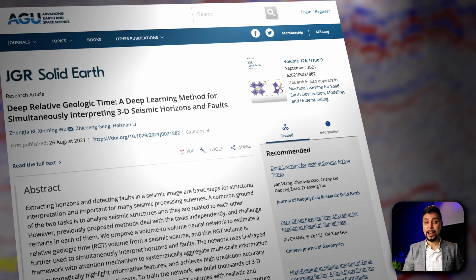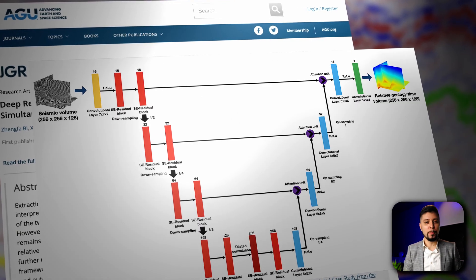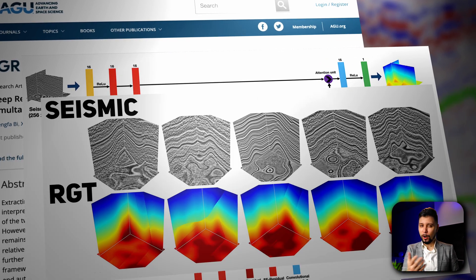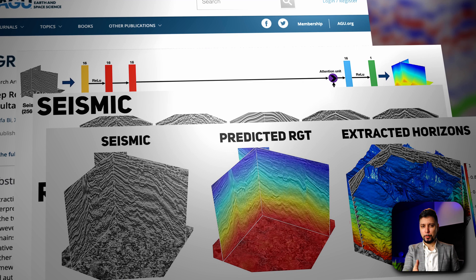That's exactly what the authors of a recent research paper proposed – a volume-to-volume neural network that estimates relative geological time from seismic and uses that RGT to interpret both horizons and faults. And the results are interesting.